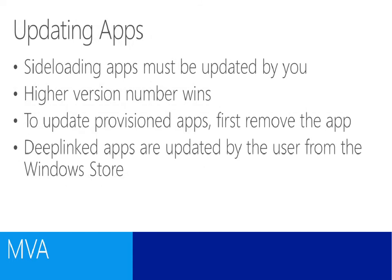The next part of the application lifecycle is around updating apps. Once we've deployed our apps, there are going to be updates. In the case of sideloading, it's your responsibility as the administrator to deploy the updates for the app. One thing that works really well in this app model is that if you deploy an app that has a higher version number than the app already on a device, it will be updated. If the version number of the update is lower than the version installed, the update won't take place — so you have to ensure that the internal version number within the app is always higher. Any apps deployed via deep link will be updated automatically from the Windows Store; in the case of Windows 8, the user will have to go into the Windows Store and apply those updates.